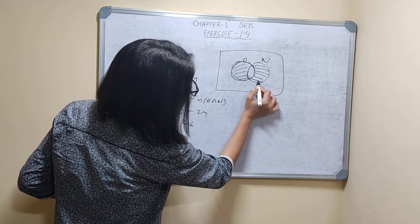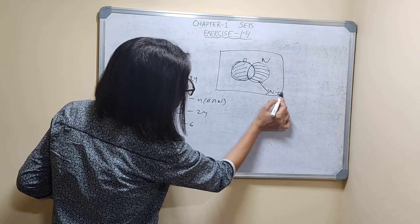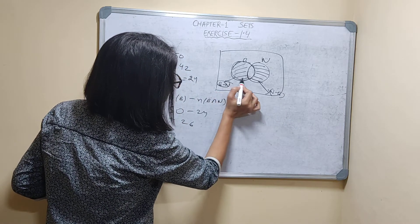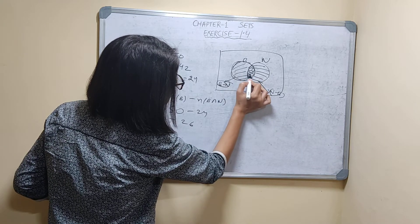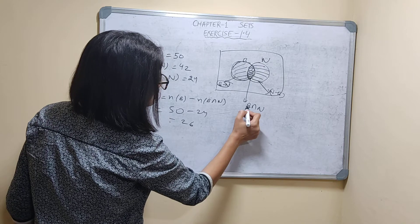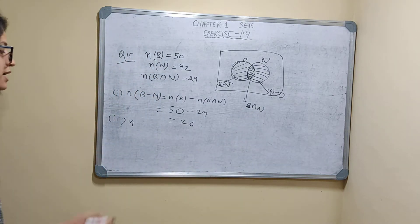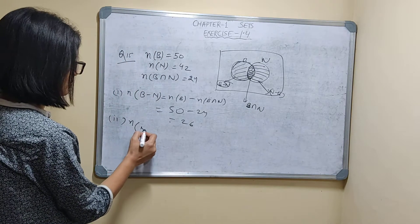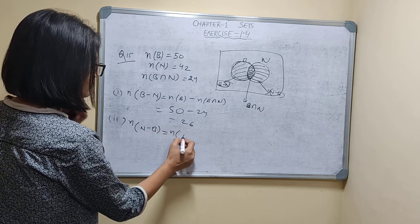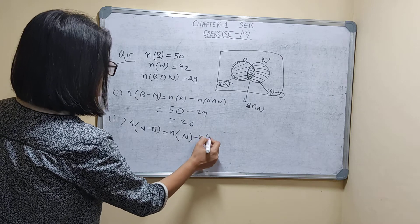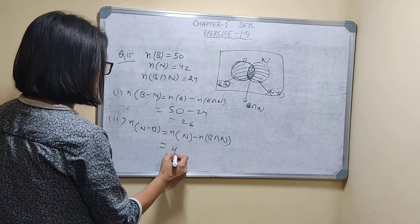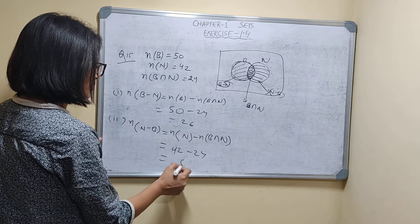Now students eating noodles only: this part of the Venn diagram is n(N) minus the intersection. n(N − B) = n(N) − n(B ∩ N) = 42 − 24 = 18.